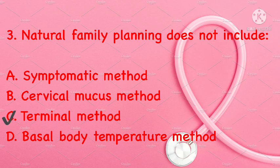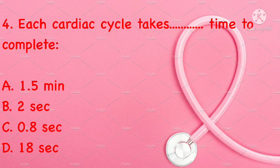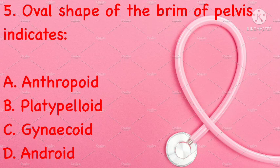The cardiac cycle takes how long to complete? 1.5 minutes, 2 seconds, 0.8 seconds, or 18 seconds. Correct answer is C: 0.8 seconds. Oval shape of the brim of the pelvis indicates: anthropoid, platypelloid, gynecoid, or android. Correct answer is A: anthropoid.